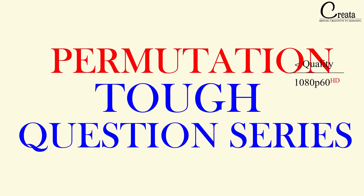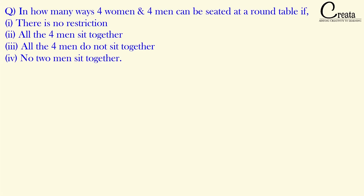Our question is: In how many ways can 4 women and 4 men be seated at a round table if: 1. There is no restriction. 2. All 4 men sit together. 3. All 4 men do not sit together. 4. No 2 men sit together.